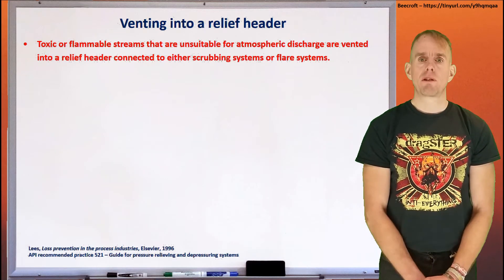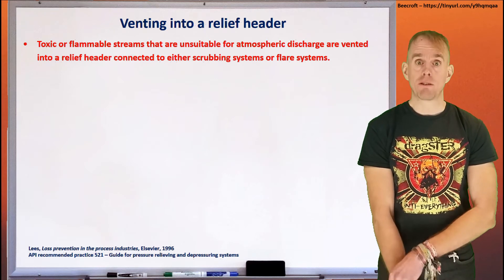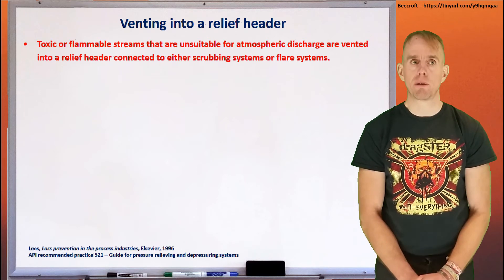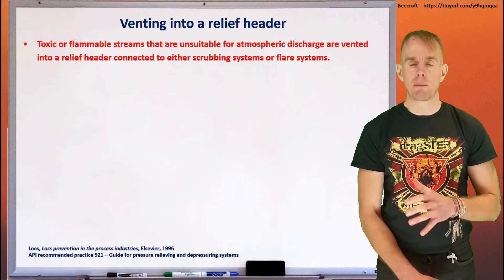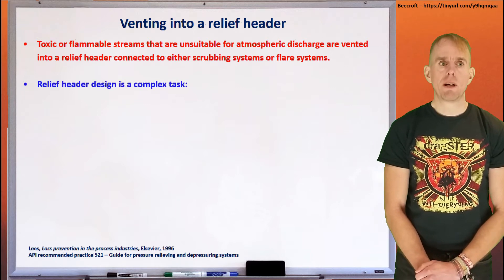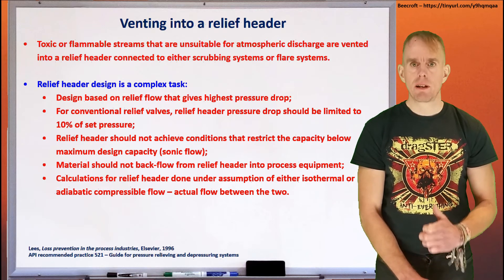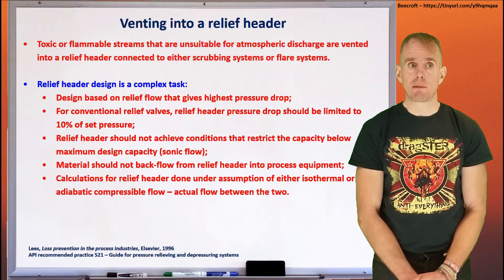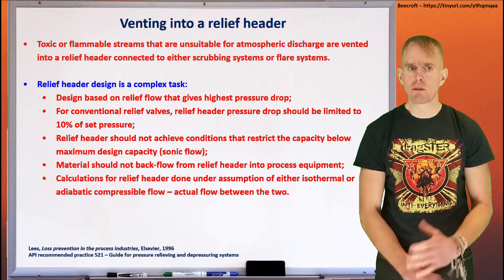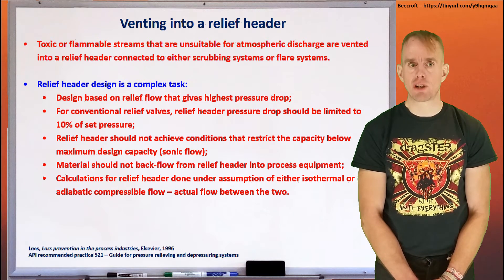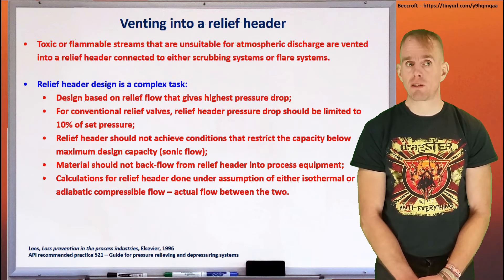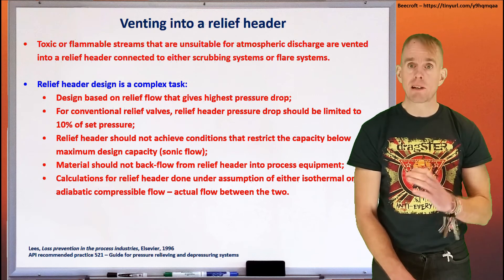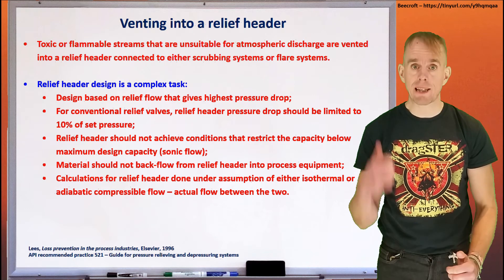If you can't dispose safely of a flammable or toxic gas through a relief valve, then you have to treat it somehow — discharging your relief device into a set of pipework. It's essential that this pipework doesn't put an upper limit on your relief system. So what we need to do is design a relief header, and we need to make sure it adheres to the following criteria: the design is based on the relief flow that gives the highest pressure drop — that might be a fire relief scenario from one or more vessels. For conventional relief valves, the relief header pressure drop should be limited to 10% of the set pressure of that valve. The relief header should never achieve conditions that restrict its capacity — for example, thinking back to compressible flow, even in a constant diameter piece of piping, a compressible gas will form a boundary layer that eventually will end up choking it under certain conditions, so that cannot happen in a relief header.